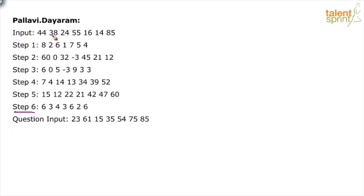Now, what do you see in step 1? The input was 44, 38, 24, 55, 16, 14, 85. In step 1 itself, the numbers have got changed. What happened here? We have taken the digital roots of each of the given numbers in the input. 44, you know what is the digital root, right? Add the digits to get a single digit number. So, 44 is 4 plus 4 is 8. For example, 55 is 5 plus 5, which gives you 10. But 10 again is a 2-digit number. So, we will add the 2 digits until we get a single digit number. So, 55 becomes 1.